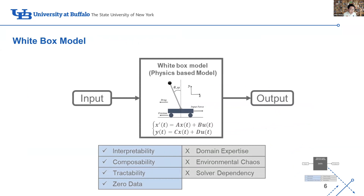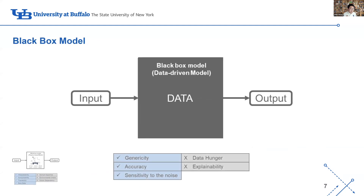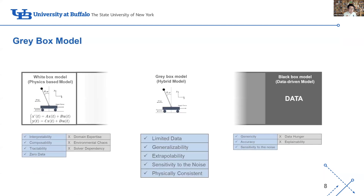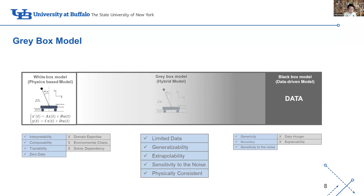Our first idea is a white box model, which uses the physics-based model — using our knowledge from physics to model the pendulum. The drawback is obvious: you need domain expertise and must model everything in detail. But the advantage is you don't need data. Another idea is a black box model, which uses only data. We use a gray box model, which is a hybrid model, and we can use the advantages of both the white box and black box models.